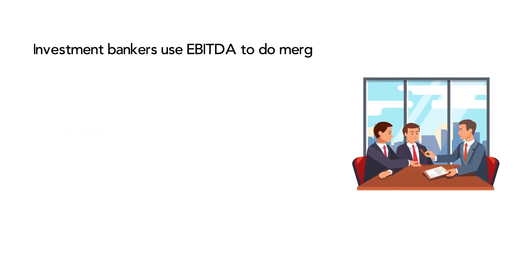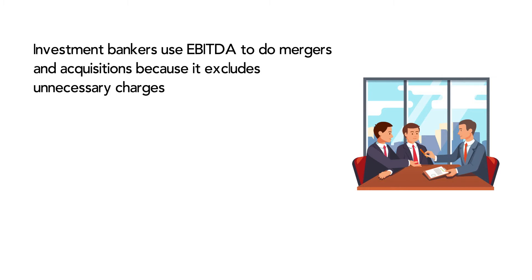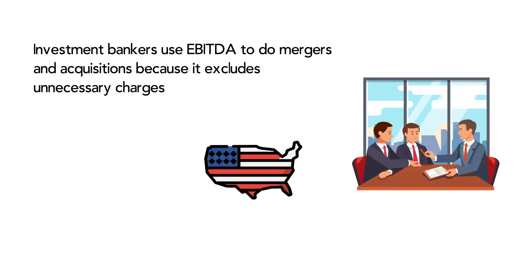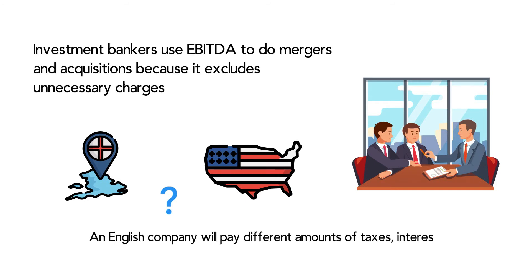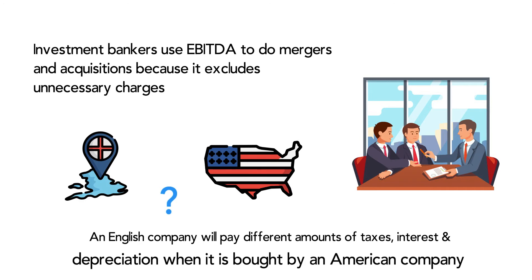Investment bankers doing mergers and acquisitions use EBITDA to get a clearer picture of the company and its valuation. For example, if you run an American company and plan to buy a British company, would you need to worry about how much depreciation, interest or taxes the company pays? The answer is you wouldn't, because after you own it you'll probably pay taxes in America, not Britain.